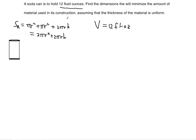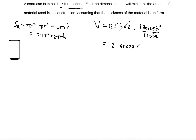We need to understand the units associated with the construction of the material. Right now we have fluid ounces, but we're going to build in feet — specifically cubic feet for volume. So we're going to convert using 1.80469 cubic inches per one fluid ounce. The fluid ounces cancel out, leaving us with 21.65628 cubic inches. That's the volume.